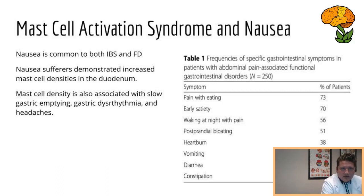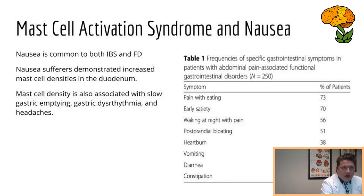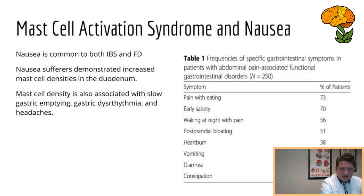Nausea is common to both IBS and functional dyspepsia. Functional dyspepsia involves stomach pain — people may have early satiety, meaning they eat and get full early, and may have some massive reflux. Irritable bowel syndrome involves individuals who may have alternating constipation and diarrhea; their symptoms can be relieved with a bowel movement and they may have pain, bloating, things of that nature. The criteria keeps changing — we used to have Rome 3, now we have Rome 4. But those are the generalities of the two conditions.